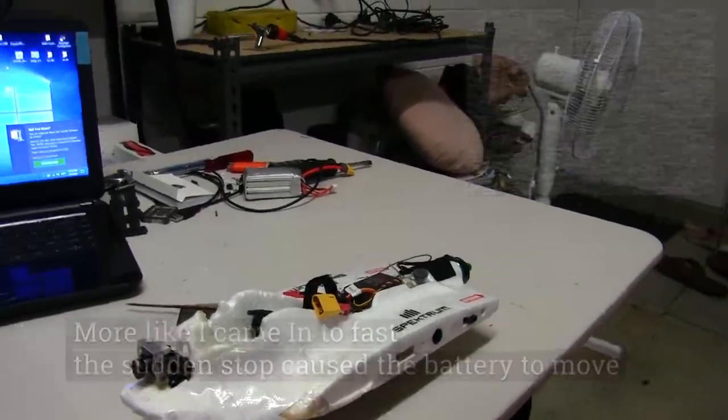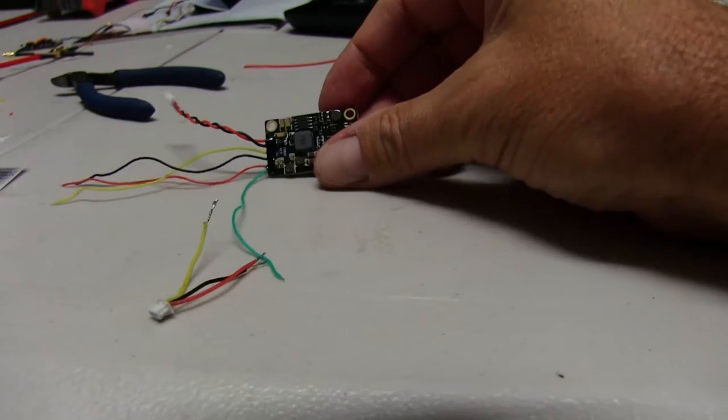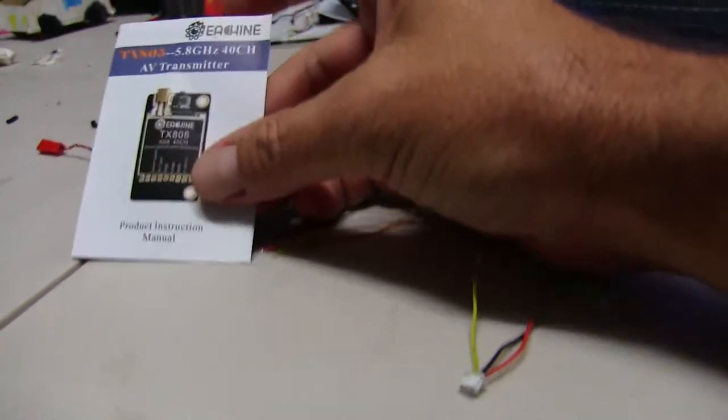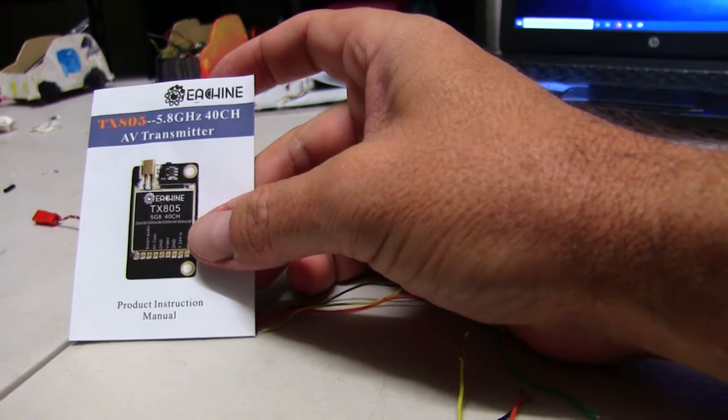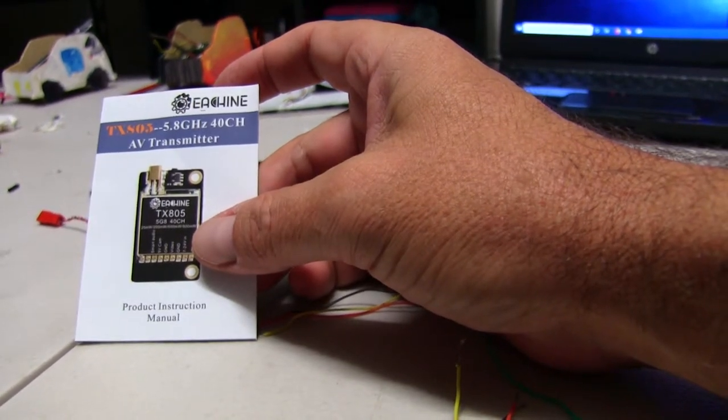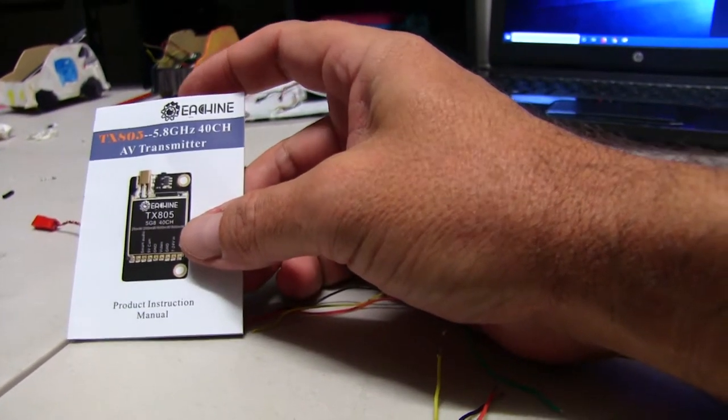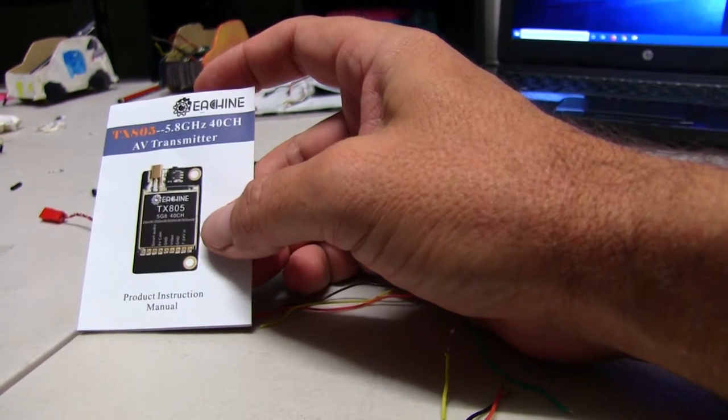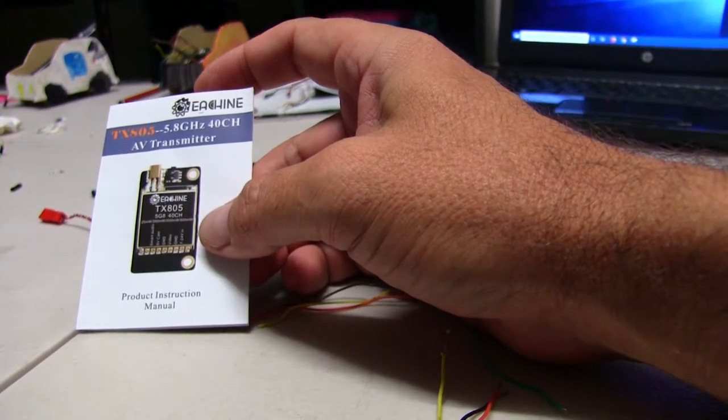So in this video I'm going to install a new video transmitter. This one here is the eShin TX805 5.8 GHz 40 channel transmitter. It's 25mm straight up to 800mW.